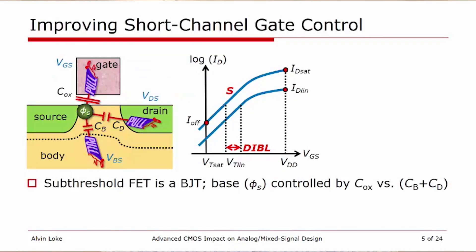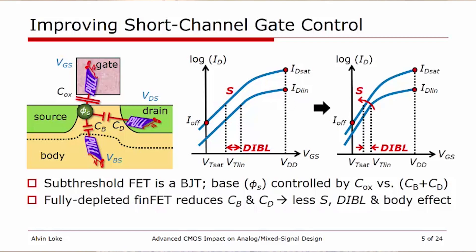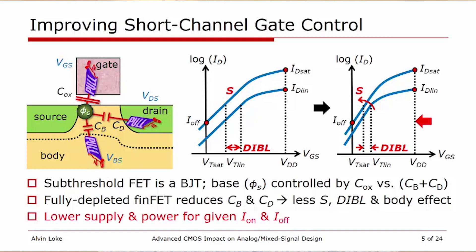Moving to smaller and smaller transistors is all about improving short-channel gate control. In order to turn a transistor on and off, you have to realize that a MOSFET is essentially a bipolar junction transistor in subthreshold operation, where the base is essentially a surface potential phi_s, which is controlled by a capacitive divider between C_ox — the oxide capacitance — in series with the body coupling C_B and drain coupling C_D. With a fully depleted FinFET, we can reduce both C_B and C_D, and the reduced body and drain coupling results in steeper subthreshold swing, drain-induced barrier lowering, and body effect. The net benefit is a substantial reduction in supply voltage for a given I_on and I_off.